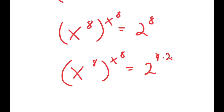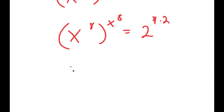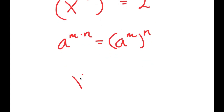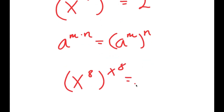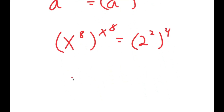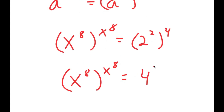I can rewrite 2^8 as 2^(4×2), which using the property a^(m×n) = (a^m)^n gives 2 squared to the power of 4, which is 4^4. So the equation becomes x^8 to the power of x^8 equals 4 to the power of 4.